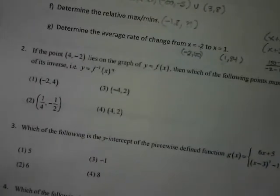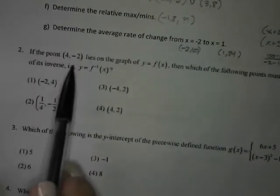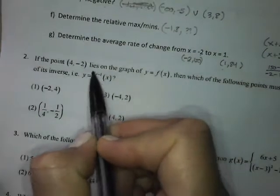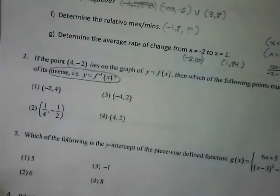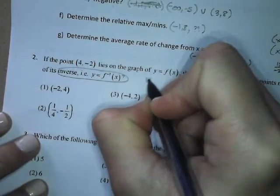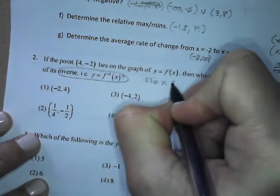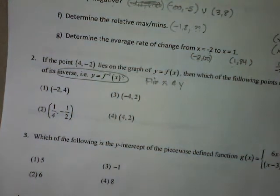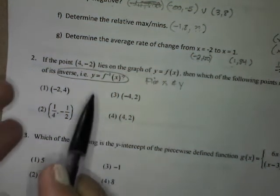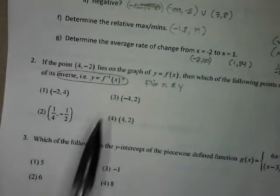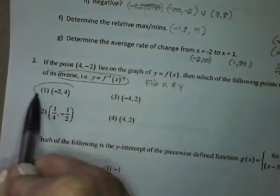Multiple choice: if the point (4, −2) lies on the graph, which point must lie on the graph of the inverse? The key concept with inverses is we flip the x's and y's. So (4, −2) becomes (−2, 4).